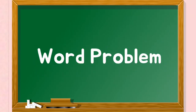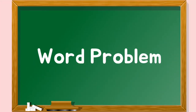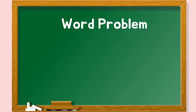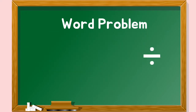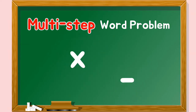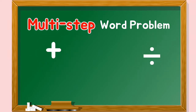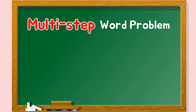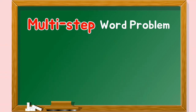In a one-step word problem, we usually solve it using one operation: addition, subtraction, division, or multiplication. While in a multi-step word problem, we need more than one operation to solve the problem. In this video, we will work on Multiplication and Addition, or Multiplication and Subtraction word problems.